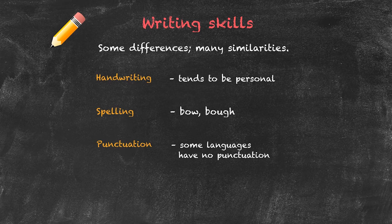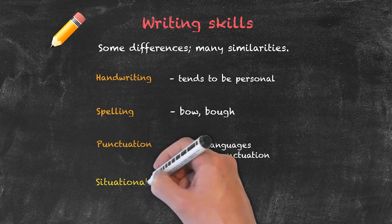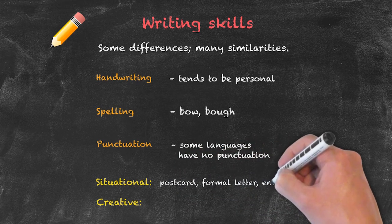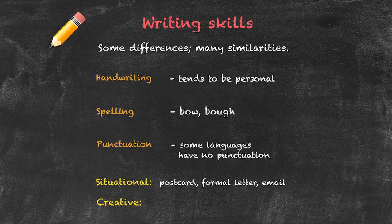There are different types of writing that we can do within each of these particular skills, and they would be categorised as either situational or creative. A situational piece of writing refers to a different type of writing that might take place. For example, the way in which we write a postcard would probably not be the same as the way we would write a formal letter, and a formal letter would probably not be exactly the same as an email.